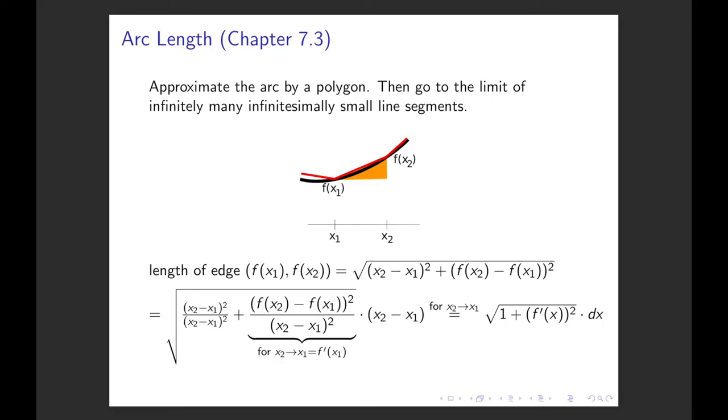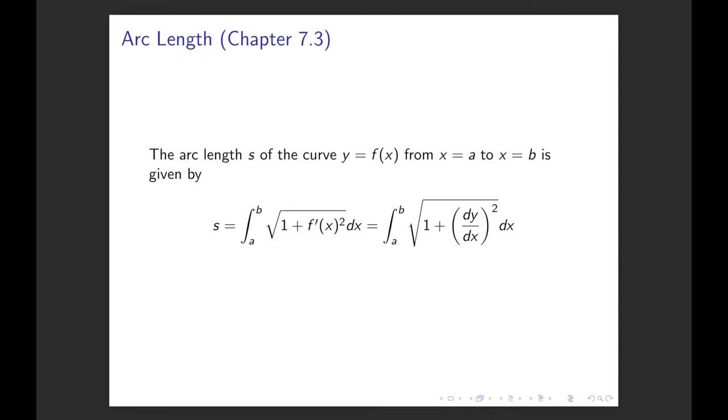And that gives us that the second summand under the square root actually becomes the first derivative at x₁ for x₂ close to x₁. So in the limit of the distance between x₁ and x₂ to 0, the length of our red little line segment becomes √(1 + (f'(x))²) dx.